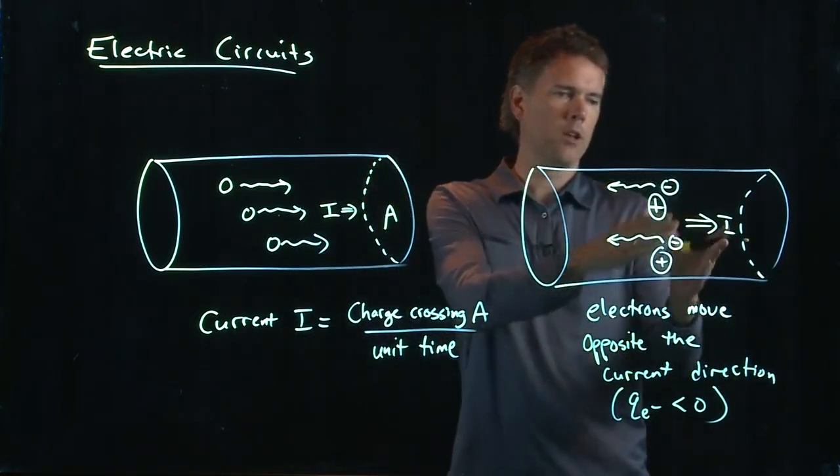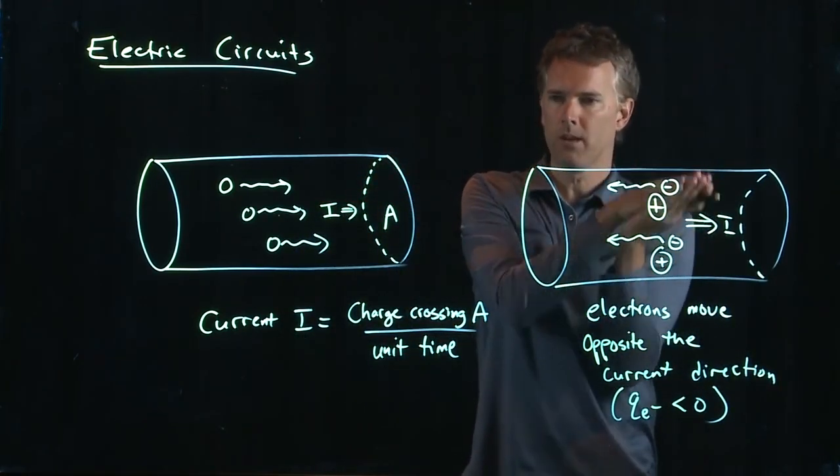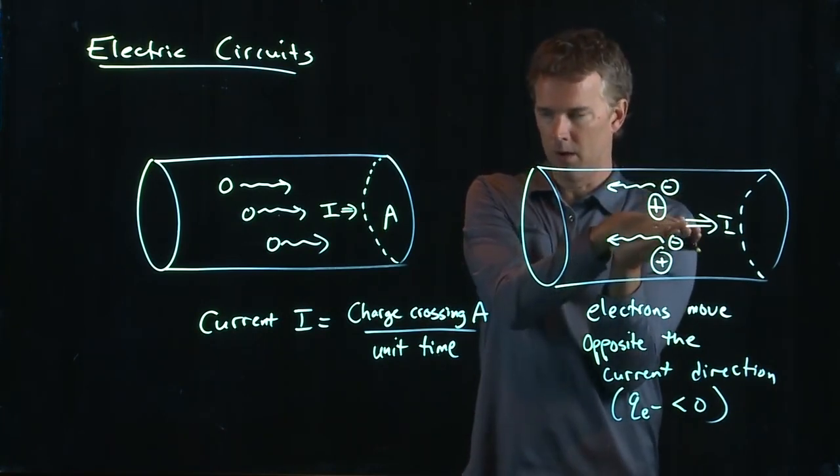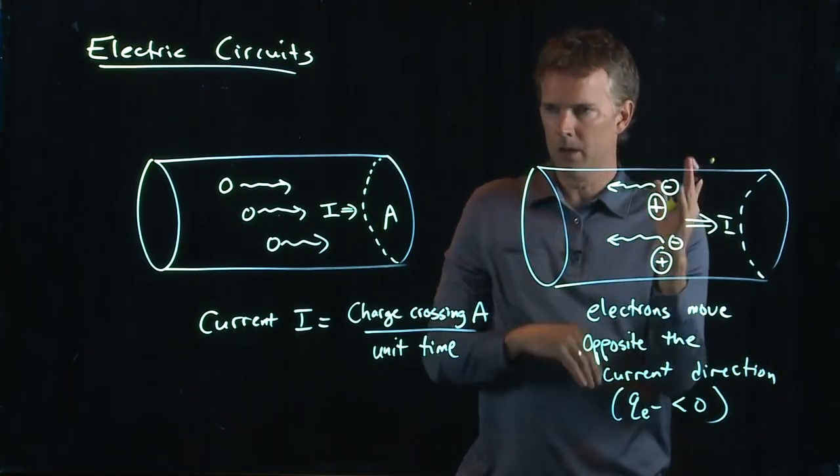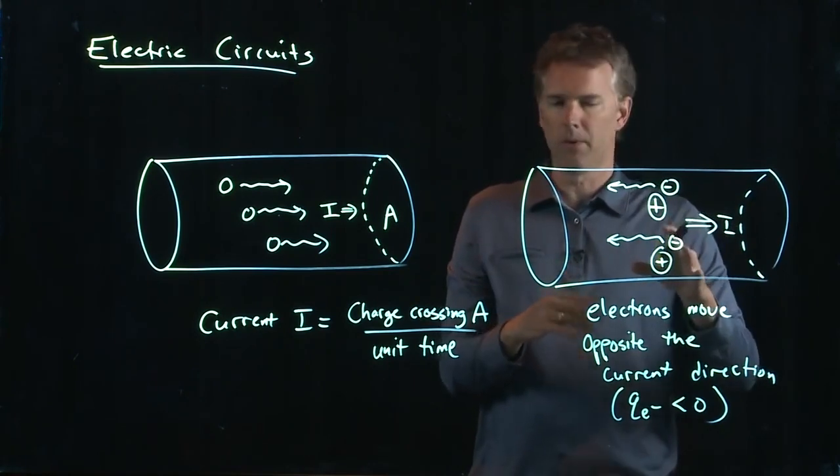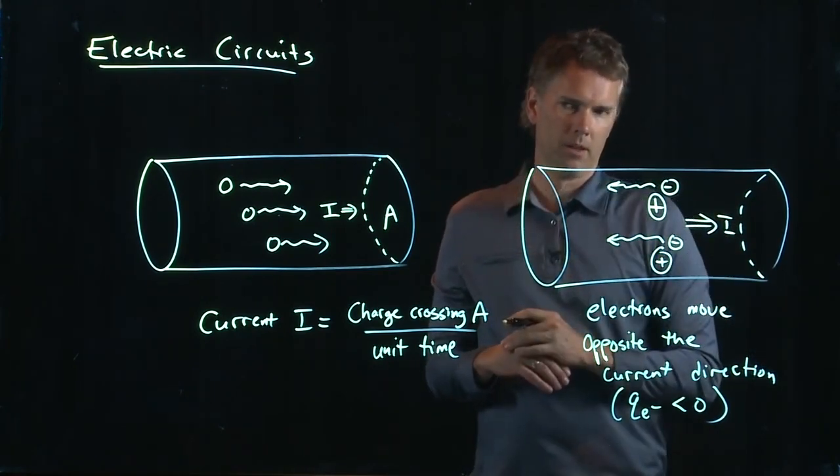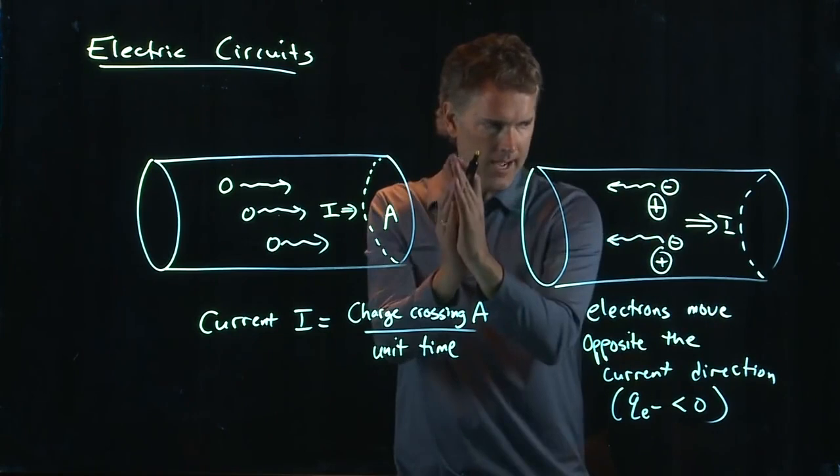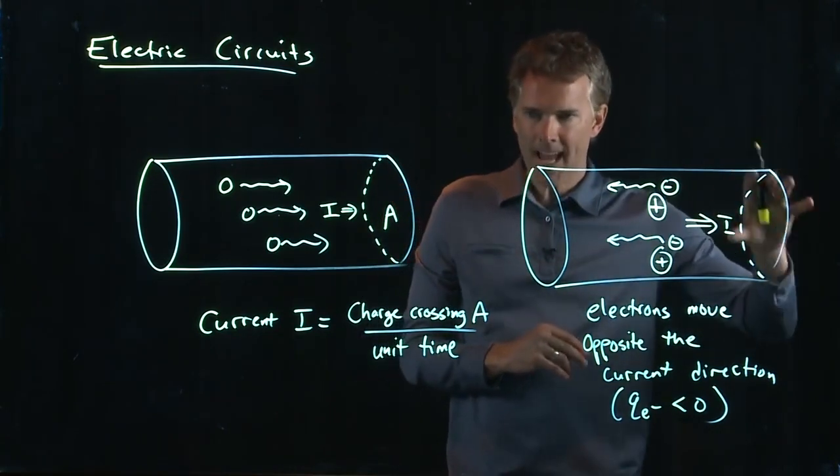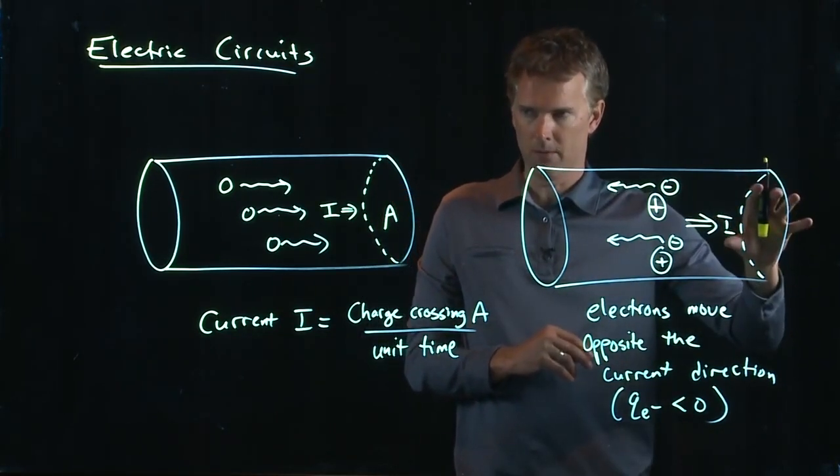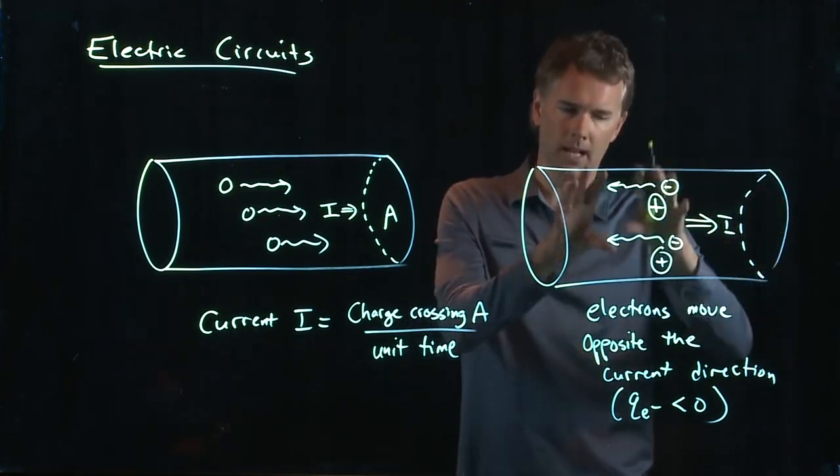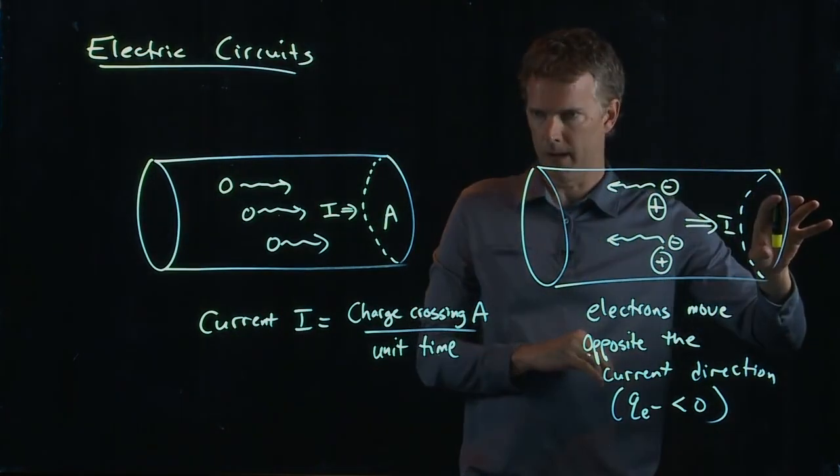So whenever we draw current, you're always talking about which way do the positive charges go. Even though in reality we know the positive charges more or less stay where they are, the electrons move this way. Now if electrons are moving to the left, there ends up a net positive charge over here on the right. And so it's effectively like those positive charges move to the right.